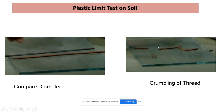Finally, when the diameter is around 3 mm and the thread crumbles into pieces, we identify that water content as the plastic limit of soil. This generally requires a number of trials — we will not get the 3 mm crumbling diameter at once. We try different water contents, and to determine the water content we can use the oven drying method or other methods.